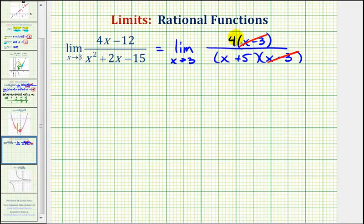Which leaves us with the function 4 divided by the quantity x plus 5. And we can use this simplified function to determine our limit. So now we have the limit as x approaches positive 3 of 4 divided by the quantity x plus 5.